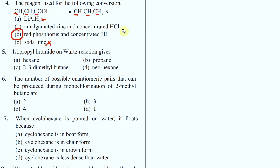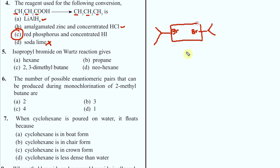We will see this later in acid and synthesis of alcohol. Isopropyl bromide on Wurtz reaction - isopropyl bromide is this structure. On Wurtz reaction, two molecules combine. The halides get eliminated and you get the product compound. Looking at the longest chain - 1, 2, 3, 4 carbons - with methyl at positions 2 and 3. So the product is 2,3-dimethylbutane.